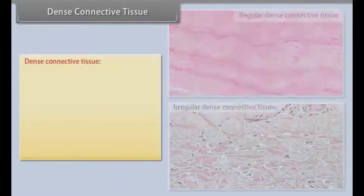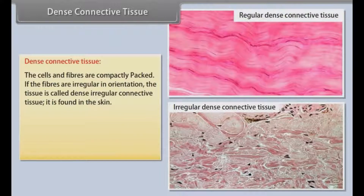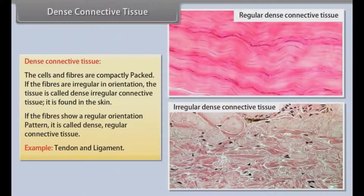Dense connective tissue has cells and fibers compactly packed. If the fibers are irregular in orientation, the tissue is called dense irregular connective tissue, which is found in the skin. If the fibers show a regular orientation pattern, it is called dense regular connective tissue — for example, tendon and ligament.